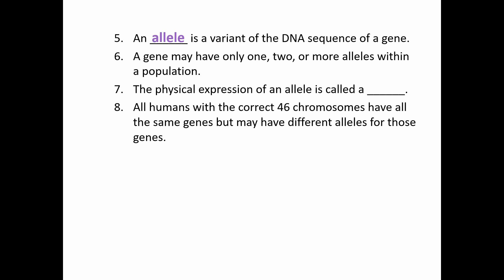When we're looking at humans, an individual person will only have two alleles, since they have two copies of each chromosome. When those two copies interact together to form the outward appearance, we call that the trait — the physical expression of the allele. All humans with the correct 46 chromosomes have all the same genes in all the same places; we just have slightly different versions. It's the different combination of alleles that gives us differences in how tall we are, what color our skin is, what color our eyes are, and other personality traits.